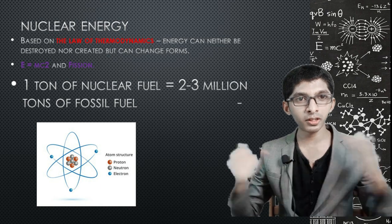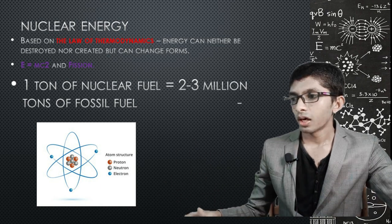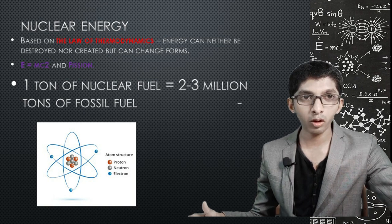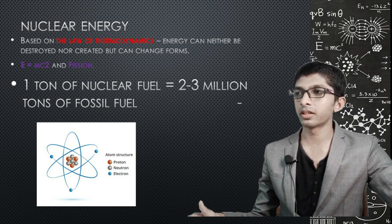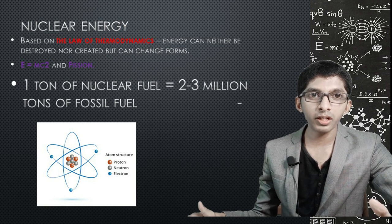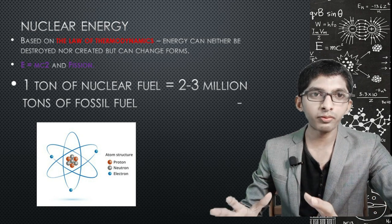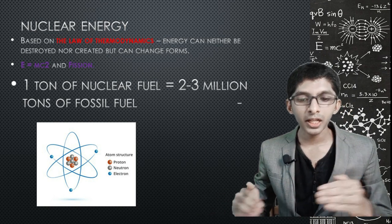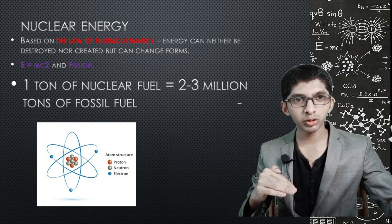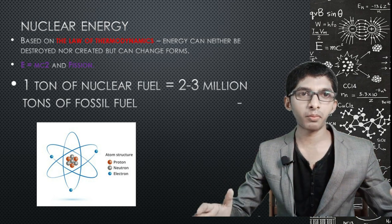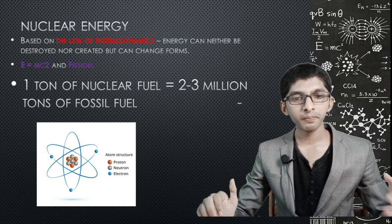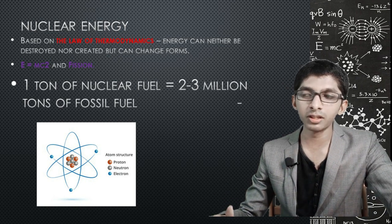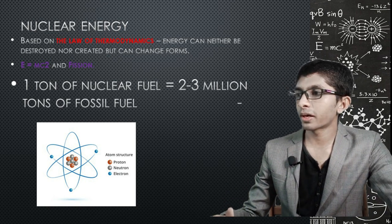In nuclear power plants, we split atoms gradually and then release the energy. We get a controlled concentration of energy.